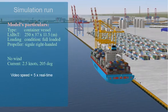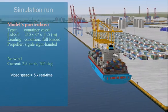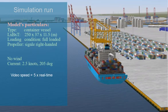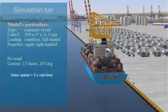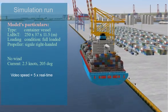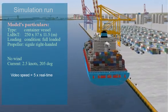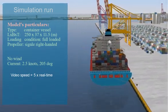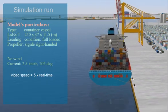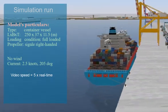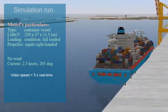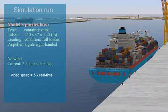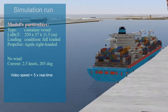In this scenario, the ship model is a container vessel. Her length is 250 meters, breadth is 37 meters, and the draft is 11.5 meters. The ship is fully loaded and fitted with a single right-handed propeller.